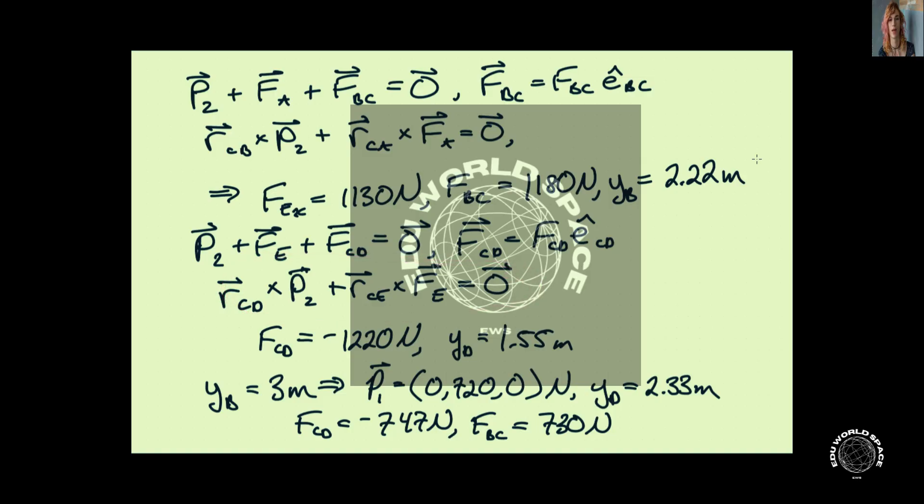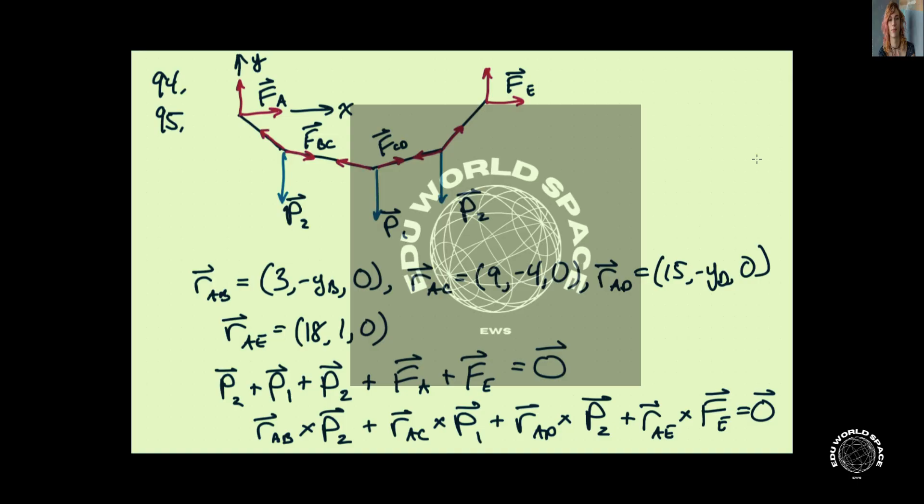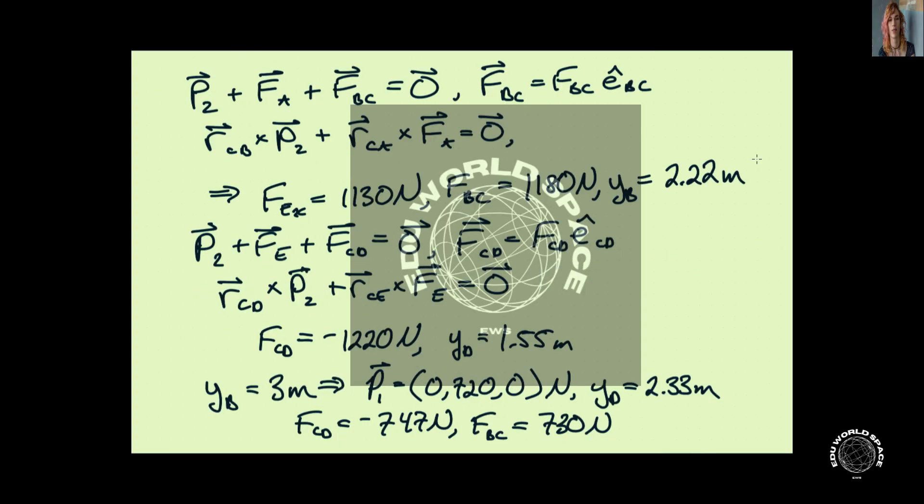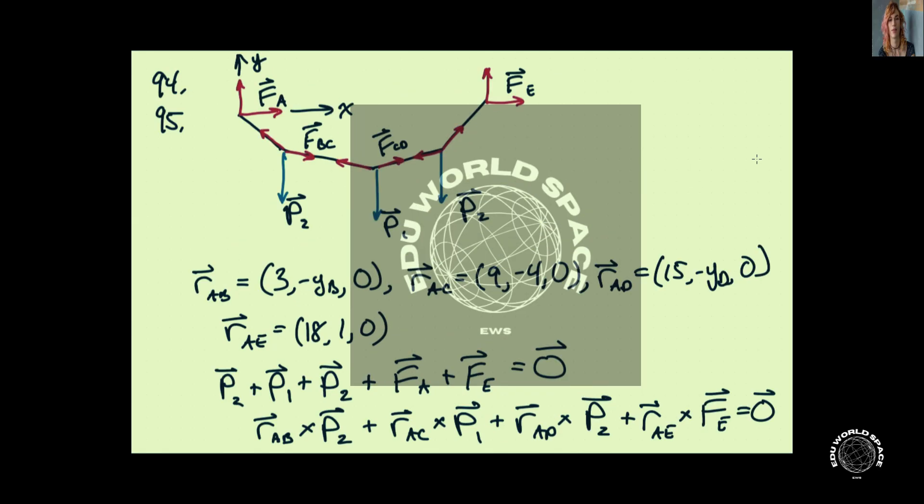And we'll get some more equations. And with those equations, we can figure out that YD is 1.55 meters. So that is this distance here. We can also figure out that FCD has a magnitude of 1,220 newtons. It is in this direction. So it's in tension, just the way we drew it.